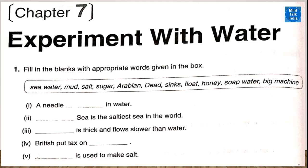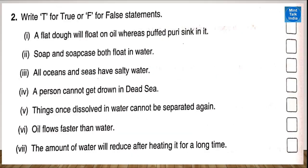Question 1, fill in the blanks. Number 1: a needle sinks in water. Number 2: the Dead Sea is the saltiest sea in the world. Number 3: honey is thick and flows slower than water. Number 4: the British put tags on salt. Number 5: sea water is used to make salt.